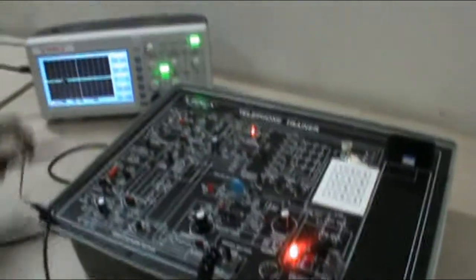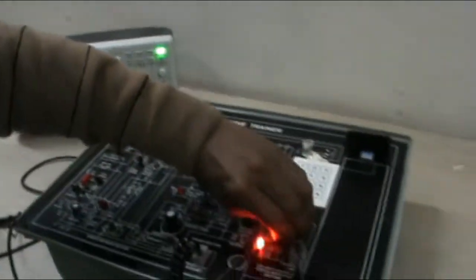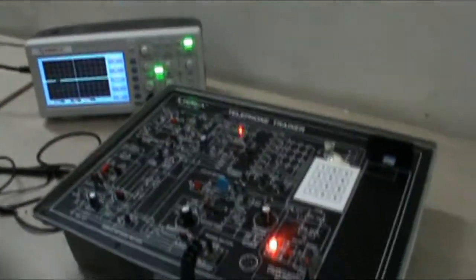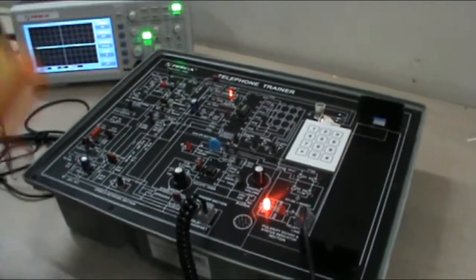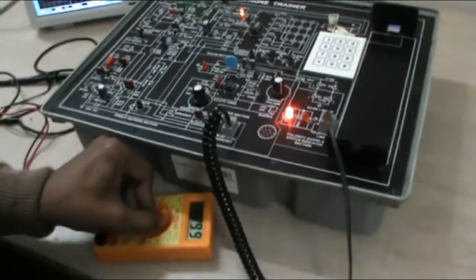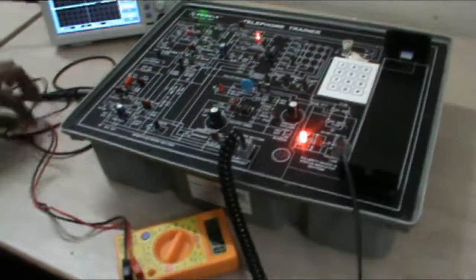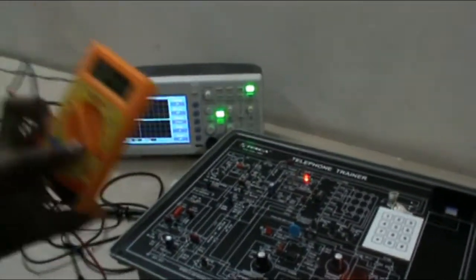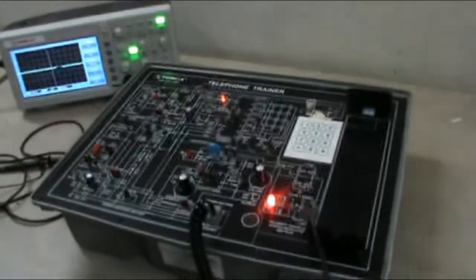You can check different signals at different test points with the help of your CRO. You can also check your voltage at different test points with the help of a digital multimeter. This equipment is also not supplied with this trainer.